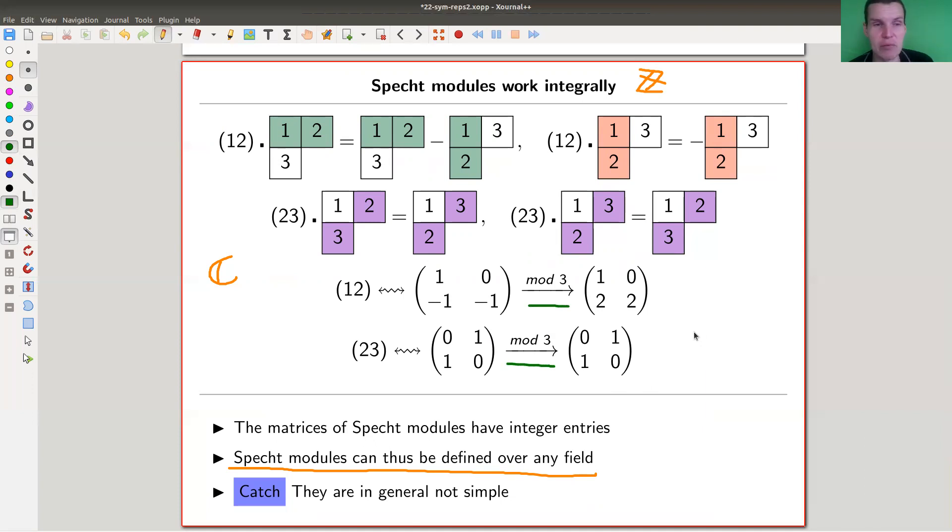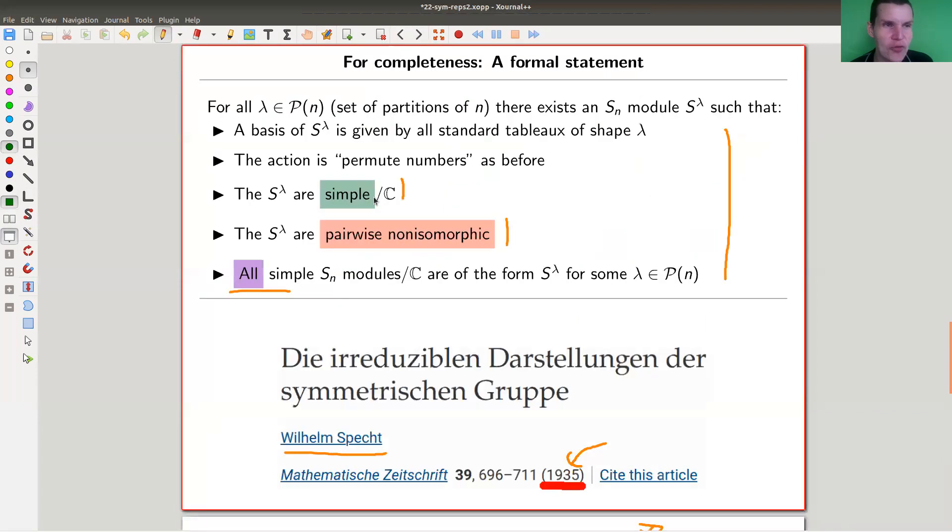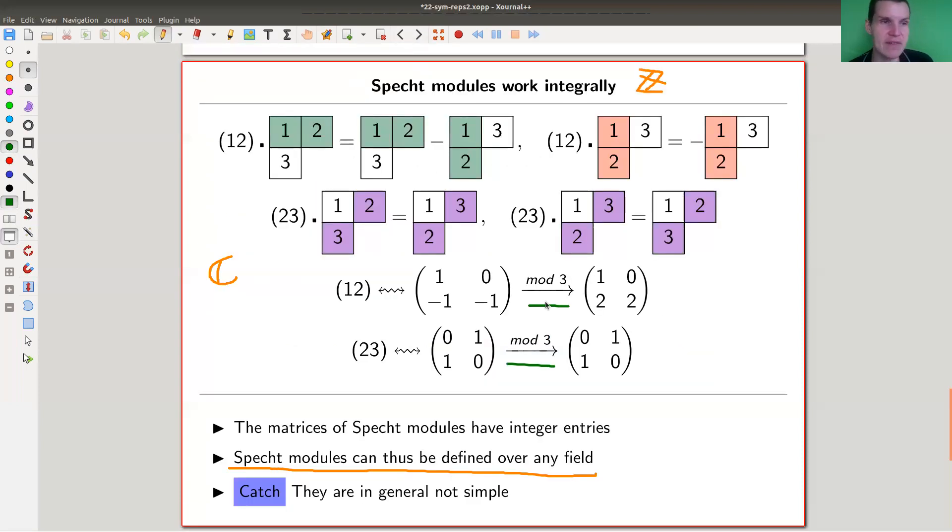You see those integer matrices, and you can take a module in your favorite characteristic and get the corresponding module. The only catch is the statement here is not as nice anymore. In particular, those things need not be simple. It really depends on your field.